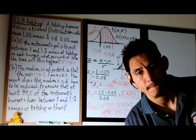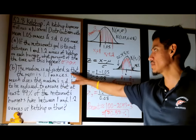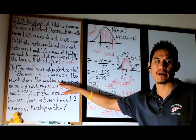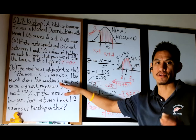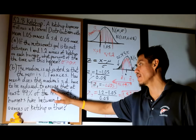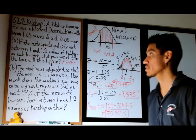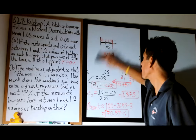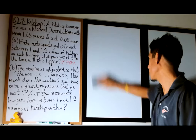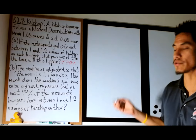Now for Part B: the machine is adjusted so that the new mean is 1.1 ounces. We want to figure out how much the standard deviation of the new setting has to be reduced to make it so that at least 99% of the restaurant's burgers have between 1 and 1.2 ounces of ketchup on them. Let's draw a new picture. Always draw a picture when you start these problems — it helps you understand it and lets the grader see your work for partial credit.